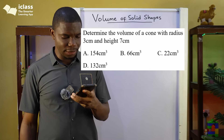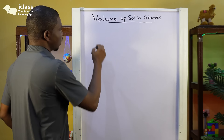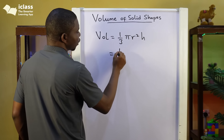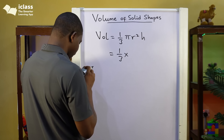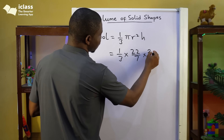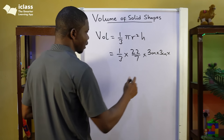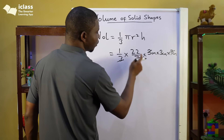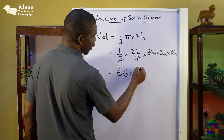Next question: determine the volume of a cone with radius 3 centimetres and height 7 centimetres. The volume of a cone is one-third pi r squared h. Pi is 22 over 7, radius is 3 centimetres, so we have 3 centimetres times 3 centimetres, and height is 7 centimetres. 3 will go into 3 and 7 will go into 7, giving us 2 times 3 equals 66. So the answer is 66 centimetres cubed.